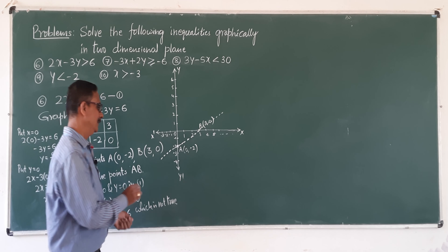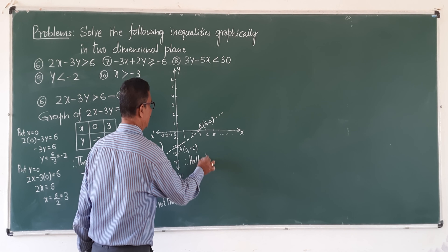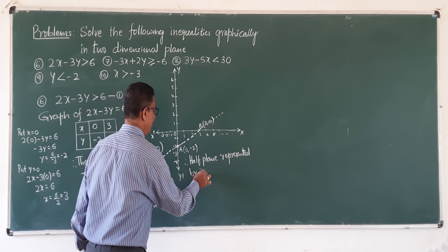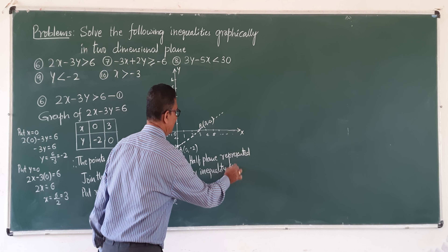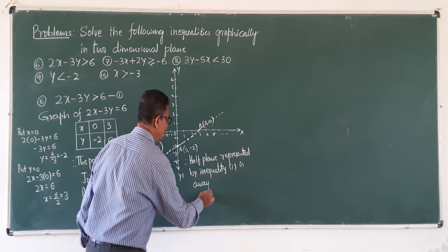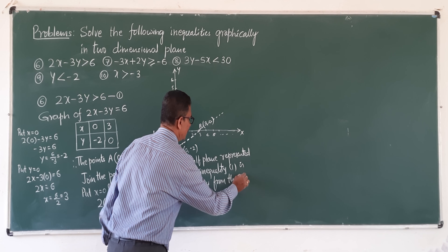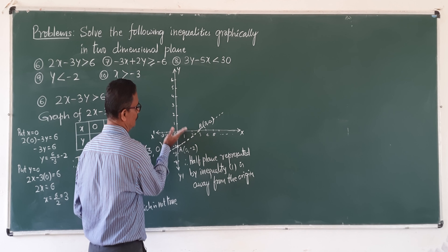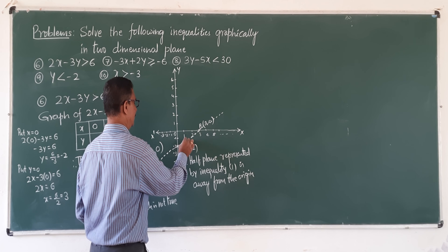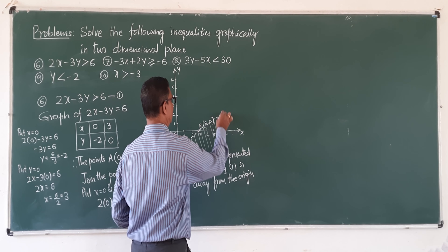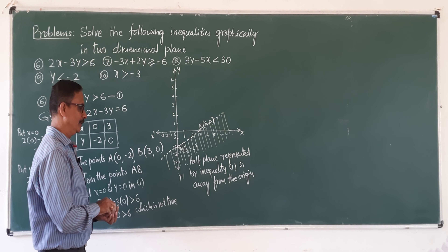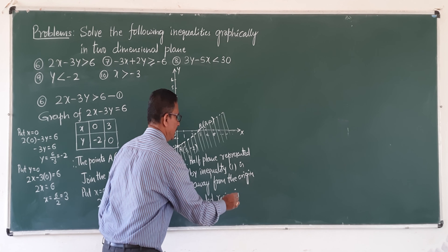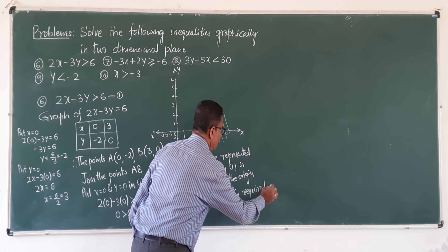Since it does not satisfy, the shading is away from the origin. Therefore, the half plane represented by the given inequality is away from the origin. The shaded region is above the line AB, away from the origin. Therefore, the shaded region is the required solution.